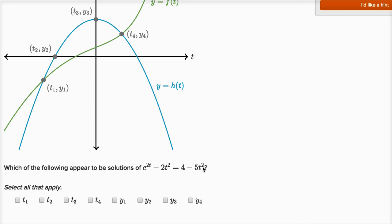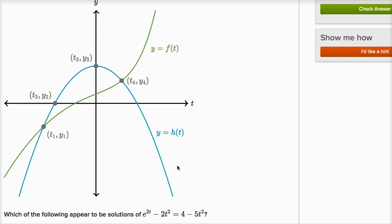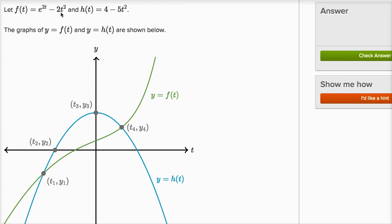Select all that apply, and I encourage you to pause the video and try to think about it. Now the key here is to realize that e to the 2t minus 2t squared, that was f of t, and 4 minus 5t squared is h of t.